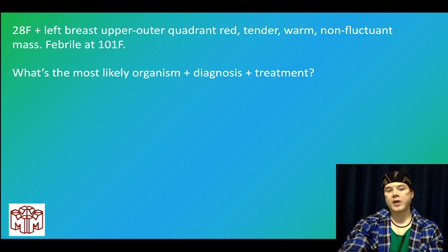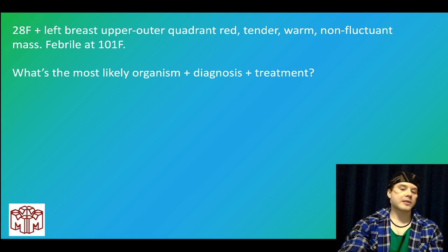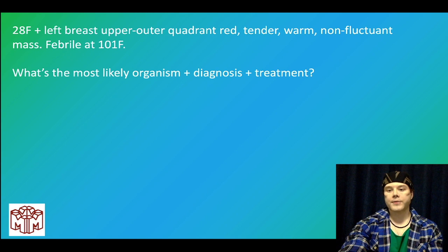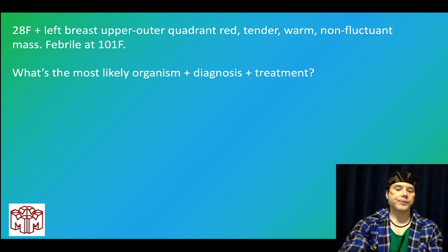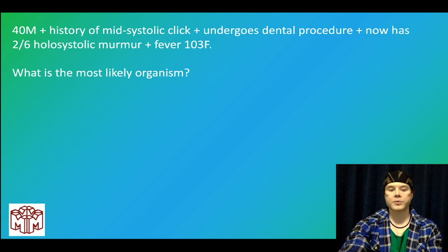A 28-year-old woman has a left breast, upper outer quadrant, red, tender, warm, non-fluctuant mass with fever 101. Most likely organism, diagnosis, and treatment? This is staph aureus causing mastitis — not an abscess, which would be fluctuant. Treatment is oral dicloxacillin or oral cephalexin, safe if breastfeeding. Not every woman will have the classic red, cracked, fissured nipple.